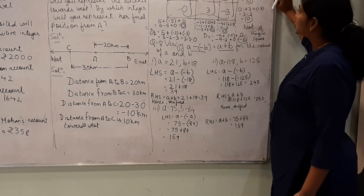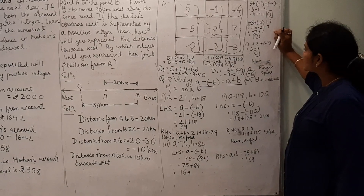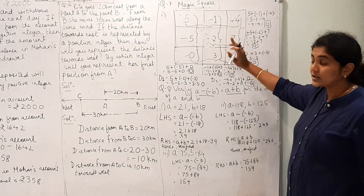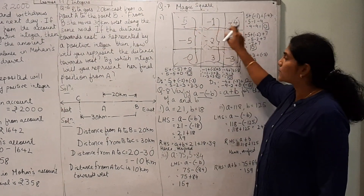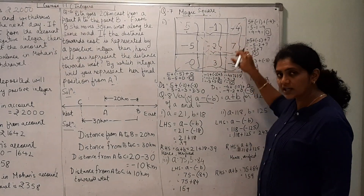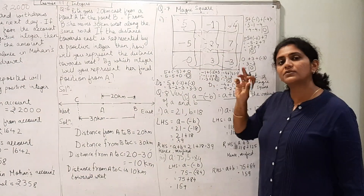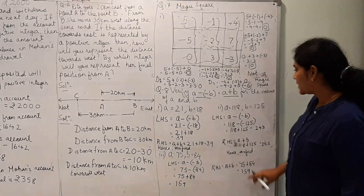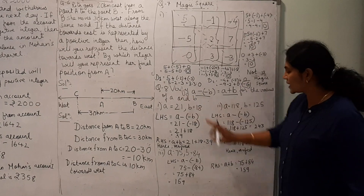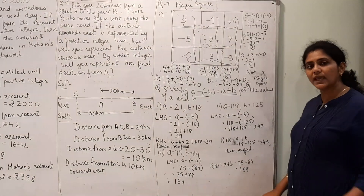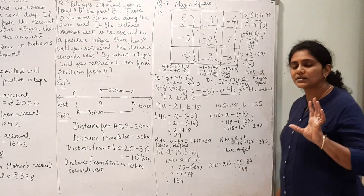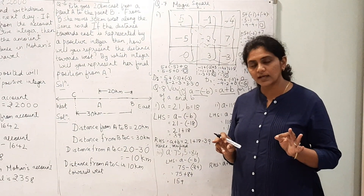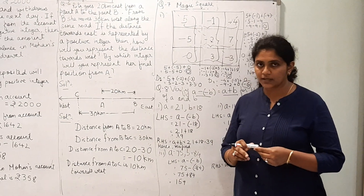The second part of question 7 — the other magic square — is your homework. Add the numbers horizontally, vertically, and diagonally; if the sums are equal it is a magic square. Question 8 part 4 is also your homework — take LHS and RHS and check if they are equal. Do it sincerely. Any doubt, you can contact me. Thank you.